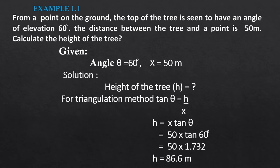Now we are going to see one example from our textbook, page number 13, example 1.1. The question is: from a point on the ground, the top of the tree is seen to have an angle of elevation of 60 degrees. The distance between the tree and the point is 50 meters. Calculate the height of the tree.